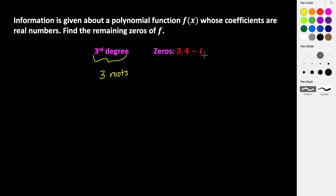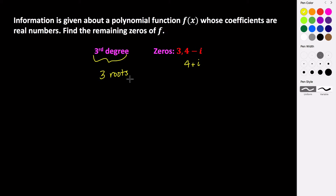We're told two zeros — a real zero and a complex imaginary zero. If you remember back to the last video, we know that all complex imaginary zeros come in conjugate pairs. So 4 plus i — its conjugate pair is also going to be a zero. And we have our three zeros, and since it's a third-degree polynomial, that's all of them.